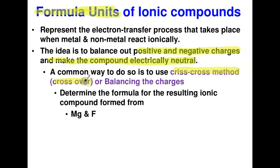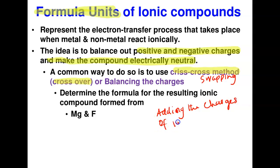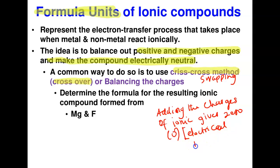In the criss-cross method, charges are swapped or exchanged. Alternatively, you can use the balancing of charges method — a little bit of algebra to ensure electrical neutrality. What that means is: whenever you add the charges of an ionic compound, they must give you zero. The charges of an ionic compound sum to zero — that is electrical neutrality.